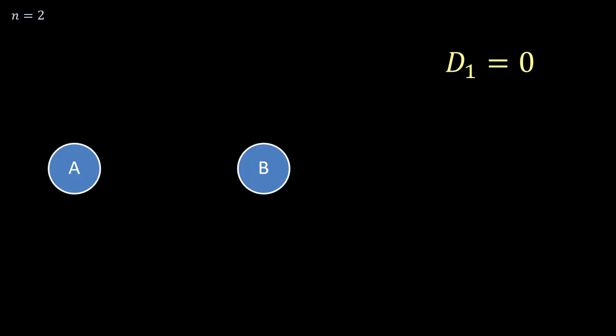n is 2 is rather trivial as well, for the only possibility is for a and b to map into each other. So D_2 equals 1.